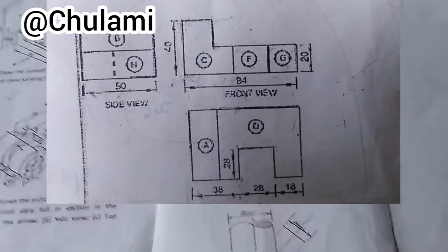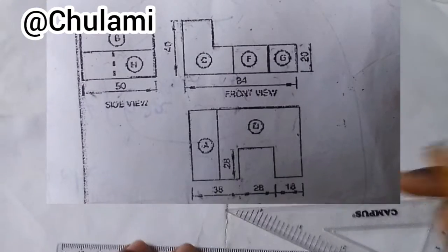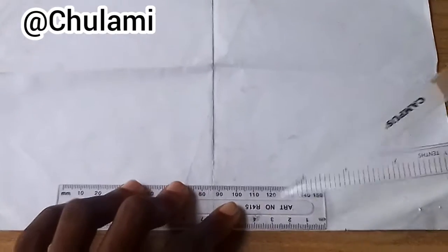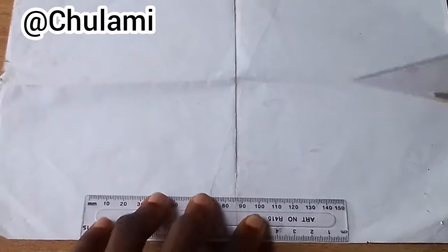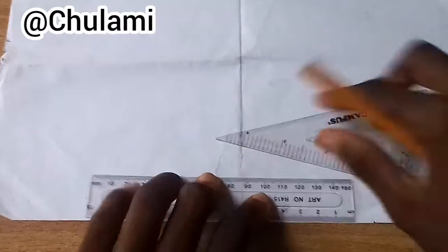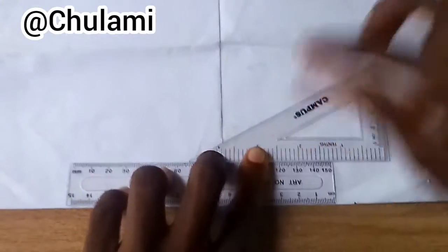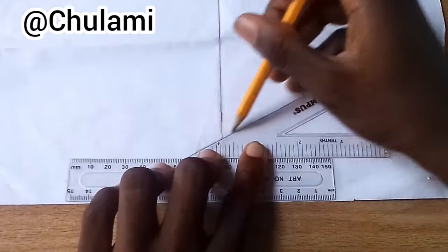So we'll start. Okay, now, first of all, the first thing we'll do, we need our ruler and our 30 degree set square. Okay, now you put it this way. Watch what I'm doing. You put it this way, and then you draw.